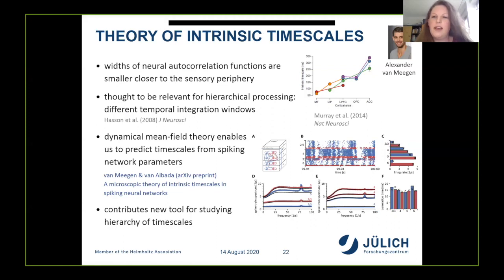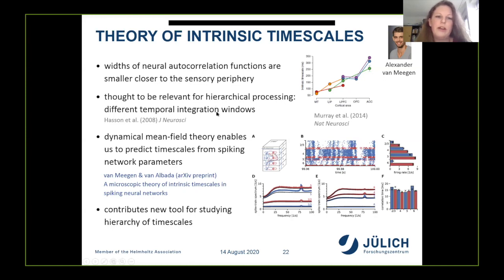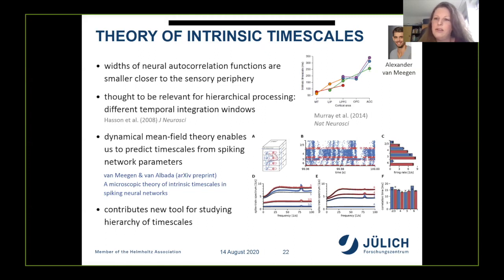Apart from firing rates, asynchrony, irregularity, and functional connectivity, we have started looking at intrinsic time scales, defined by the widths of single-neuron autocorrelation functions. These time scales increase along the cortical hierarchy and are thought to be important for information processing by providing different temporal integration windows. A PhD student in my group, Alexander von Meeggen, has developed a dynamical mean field theory that allows predicting intrinsic time scales from balanced networks of leaky integrate-and-fire units, going beyond traditional mean field theory by considering the colored noise problem. These results provide a new tool for studying the experimentally observed hierarchy of time scales.